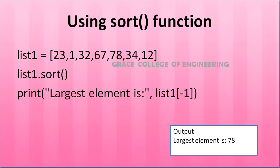First, using the sort() function. List 1 is created with the values 28, 1, 32, 67, 78, 34, 12. Then list1.sort() is called — this is a built-in method which sorts the list in order. So the biggest number will be present in the last position, meaning the largest element is list1[-1], which gives 78.